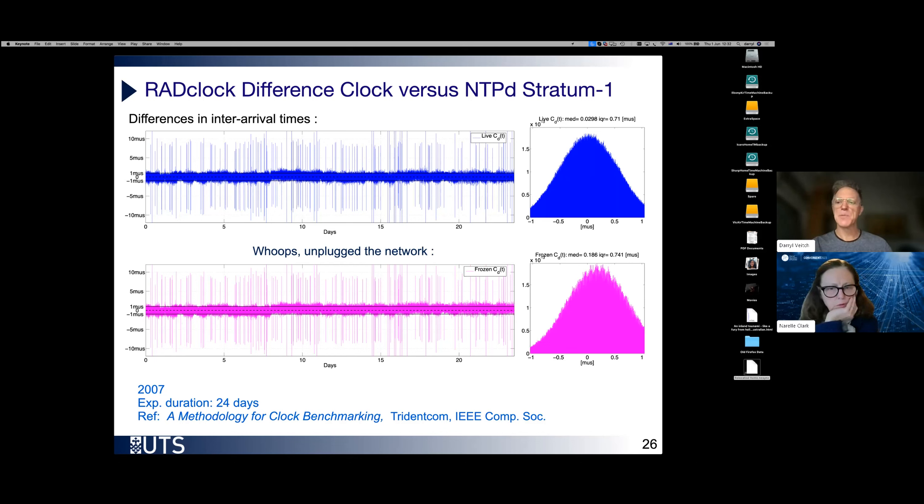What if at the beginning of this experiment, which as you can see is over 20 days long, what if we had accidentally unplugged the network? So RADclock would not have been able to communicate over the network to its server. What would happen to these measurements? Well, let's take a look. Here's the same time series, but this time we've frozen the parameters.